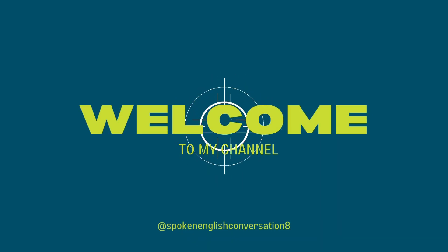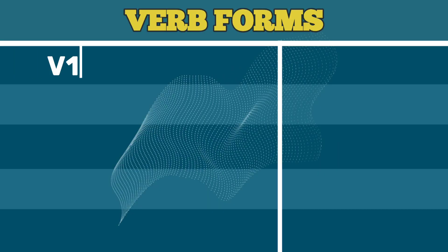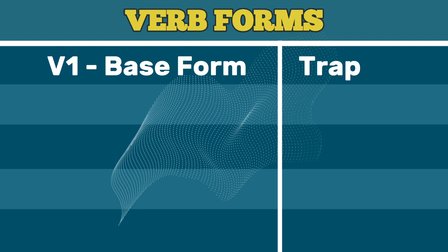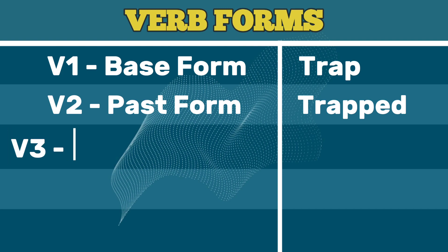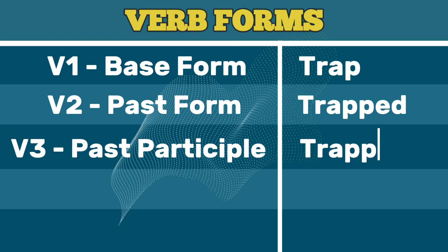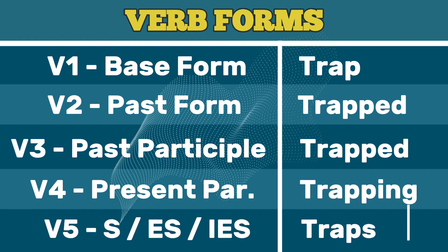Spoken English Conversations — subscribe please. V1 Base Form: Trap. V2 Past Form: Trapped. V3 Past Participle: Trapped. V4 Present Participle: Trapping. V5 Third Person Singular: Traps.